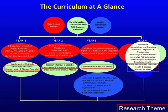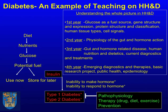Let me pull out an example of how we might consider a given disease in the programme — let's take the example of diabetes. Diabetes mellitus results from an inability to control levels of glucose in the blood, either because we don't make the hormone that helps us control blood sugar, or because we're unable to respond to that hormone.